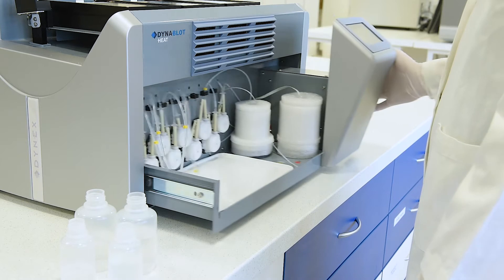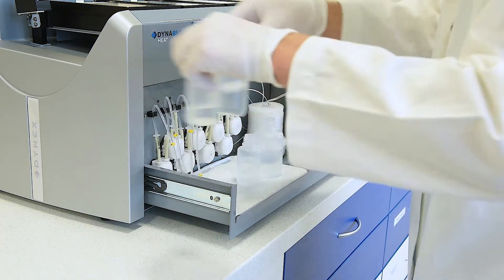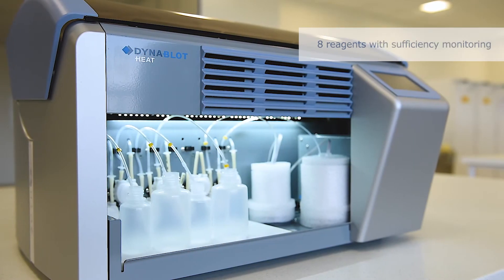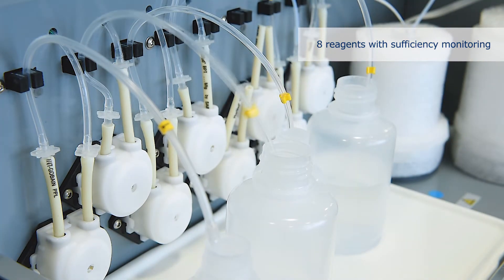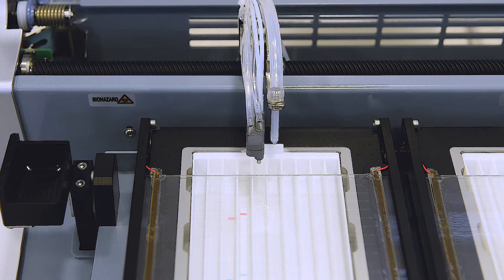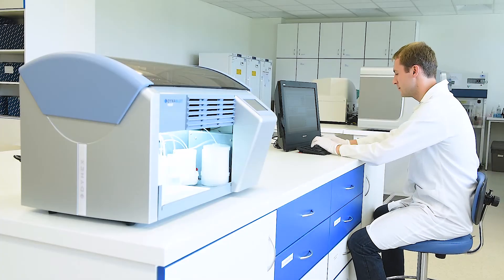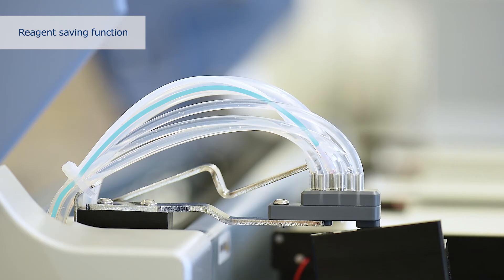The reagent bottles are placed in an easily accessible drawer in the front of the instrument. Up to eight reagents can be dispensed into the tray by a dispensing arm using peristaltic pumps. The channels are equipped with sensors monitoring the fluid sufficiency in the tubing during dispensing. With Dynebolt Heat, it is possible to save the reagents and return them out of the tubes back to the reagent bottles.